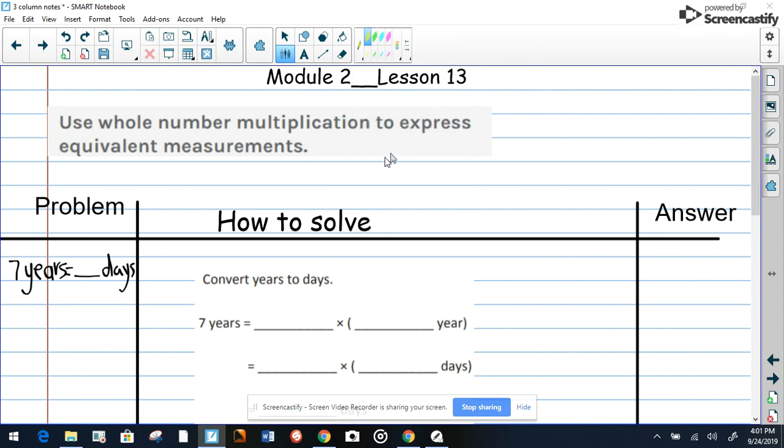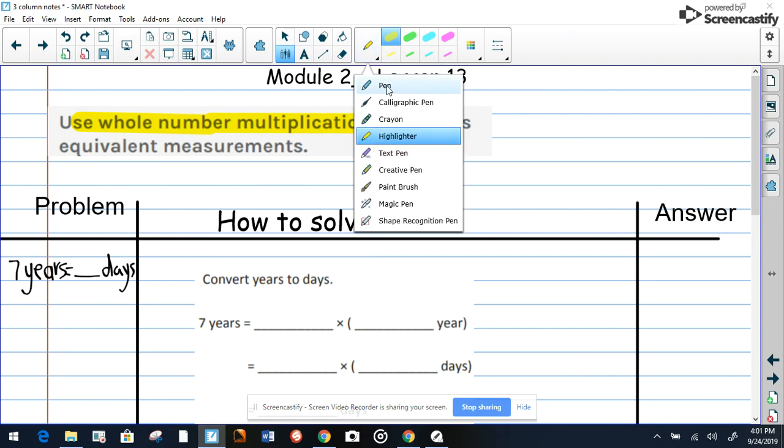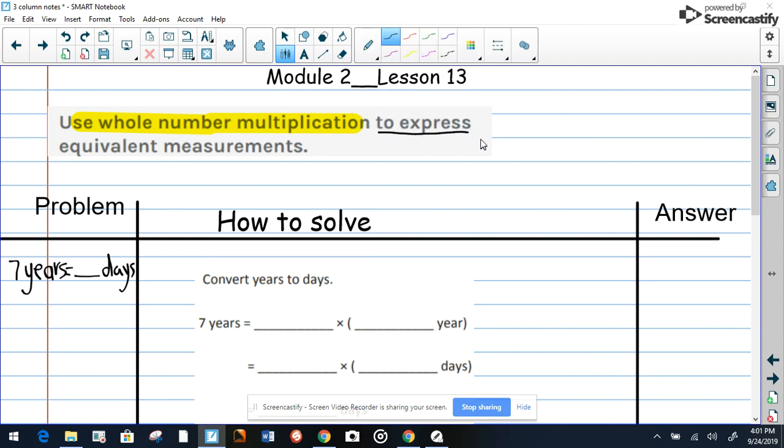Now here's what happens in this module. We are looking at the use of whole number multiplication to express equivalent measurements.